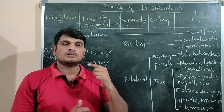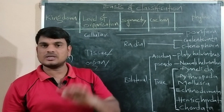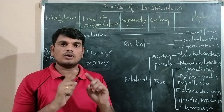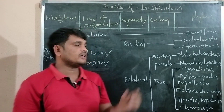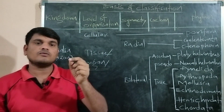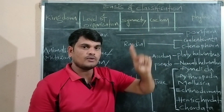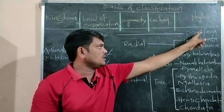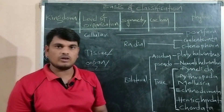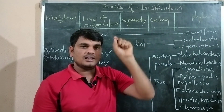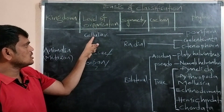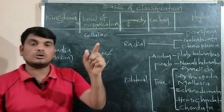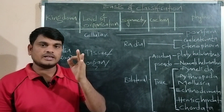Cellular level of organization means the body is made up of many cells in sponges, but there is no coordination among them. Hence they exhibit cellular level of organization. They do not form any tissue, they do not form any organ, they do not form any organ system — they stop their life at the cellular level only.